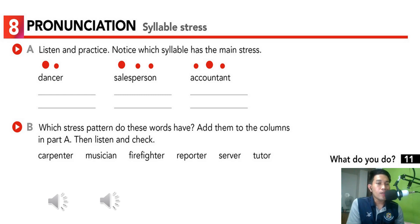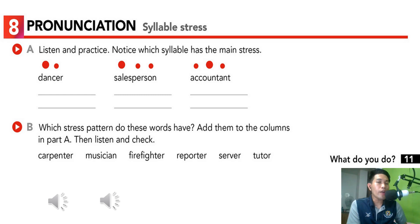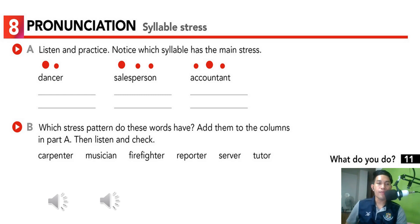Let me repeat it once more. Carpenter — which column does it fall under? Musician — which column does it fall under? Firefighter. Reporter. Server. Tutor.